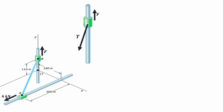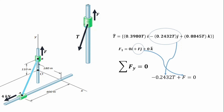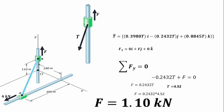Bringing back our space diagram and free body diagram along with what we've estimated — the tension in its component form and our force value in its component form — we call our equation of equilibrium relevant for this case. We know that the sum of forces in the Y direction is 0. Taking all Y components of the two forces and summing them, equating to 0, we have a new equation. Based on this equation, we can easily find the value of F. Arranging the equation, we have F equal to 0.2432T. We calculated T earlier to be 4.52 kilonewtons, so F equals 0.2432 times 4.52, giving us F equal to 1.10 kilonewtons.